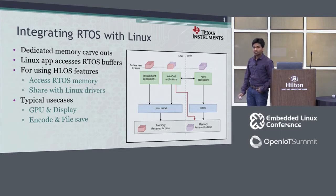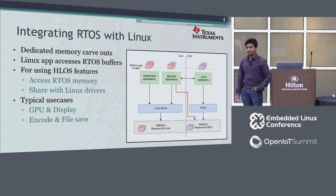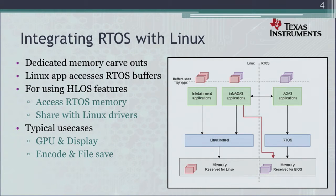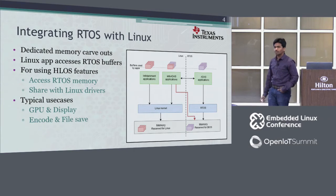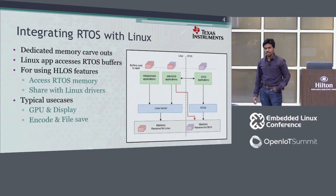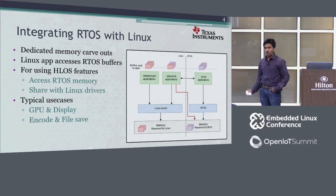This is the typical use case when integrating Linux and RTOS applications. Typically you will have memory divided into two parts: most of the memory used by Linux, and a dedicated memory region carved out for the RTOS. You may have different types of applications accessing these memories — infotainment applications running on Linux and ADAS applications running on RTOS. This is from an automotive point of view.